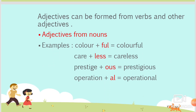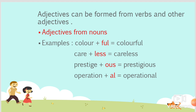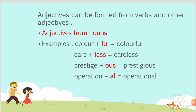Adjectives can be formed from verbs and other adjectives. Adjectives from nouns: for example, colour with -ful becomes colourful; careless; prestige with -ous becomes prestigious; operation with -al becomes operational.